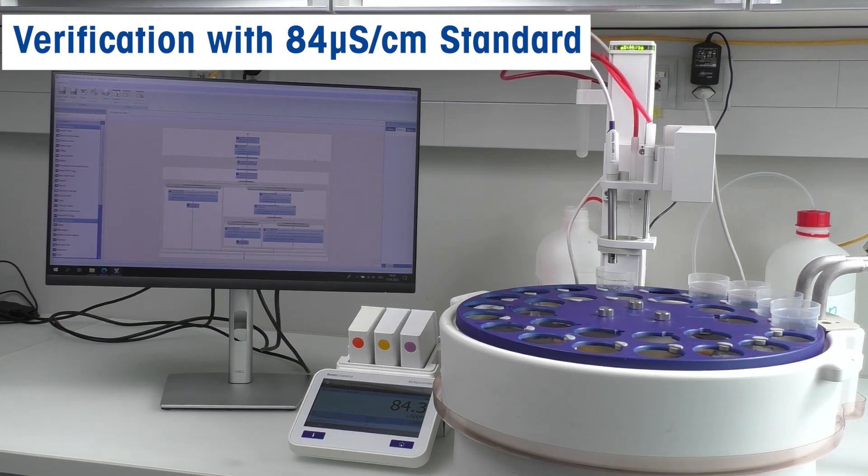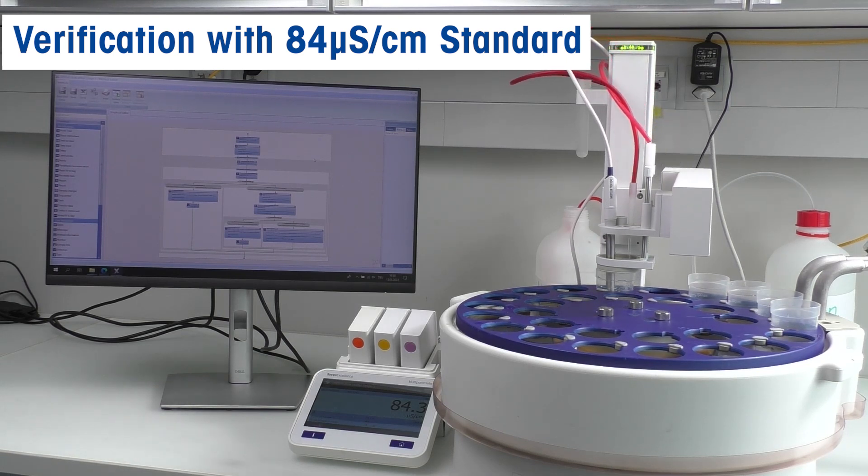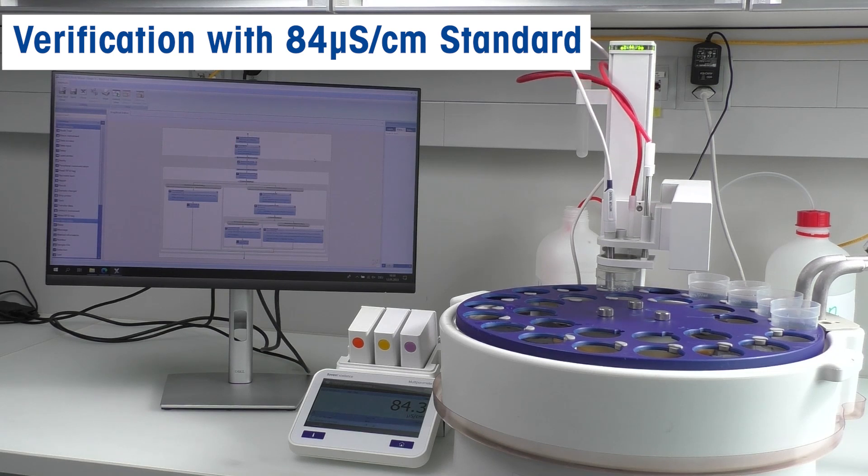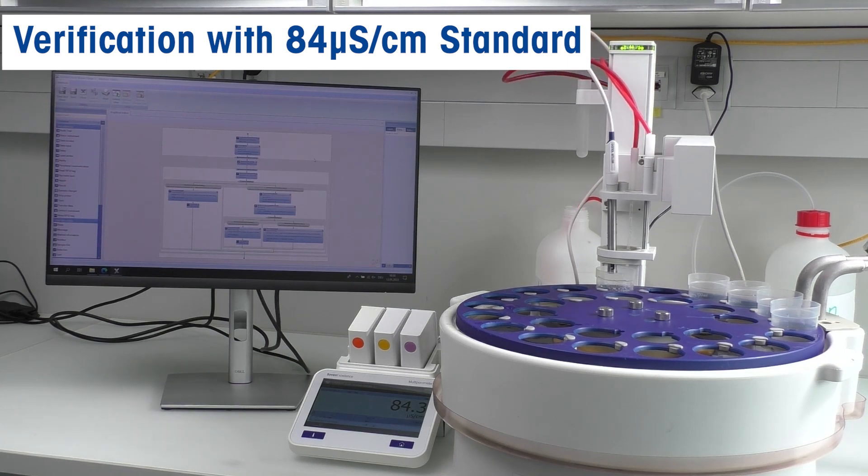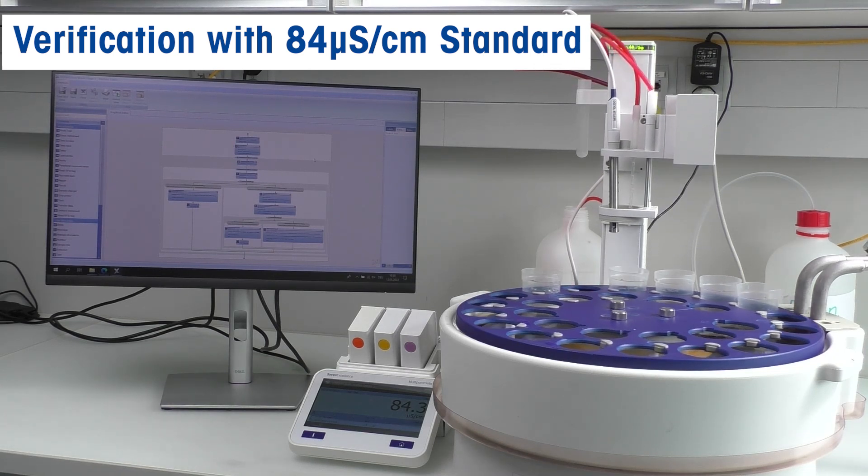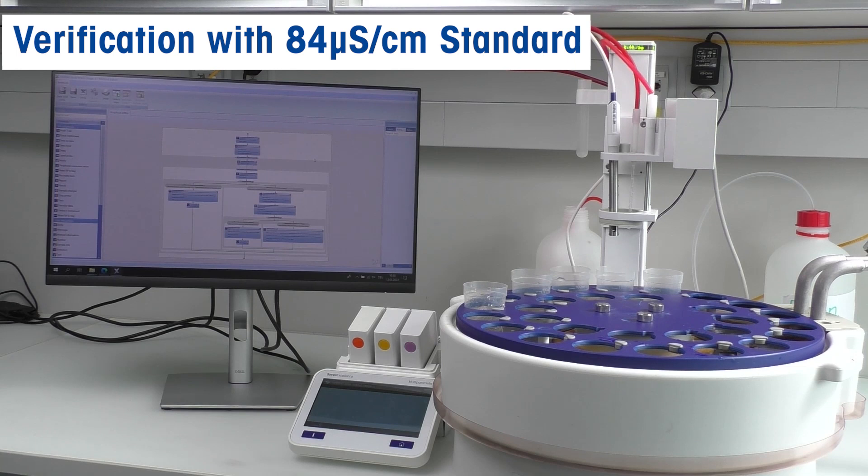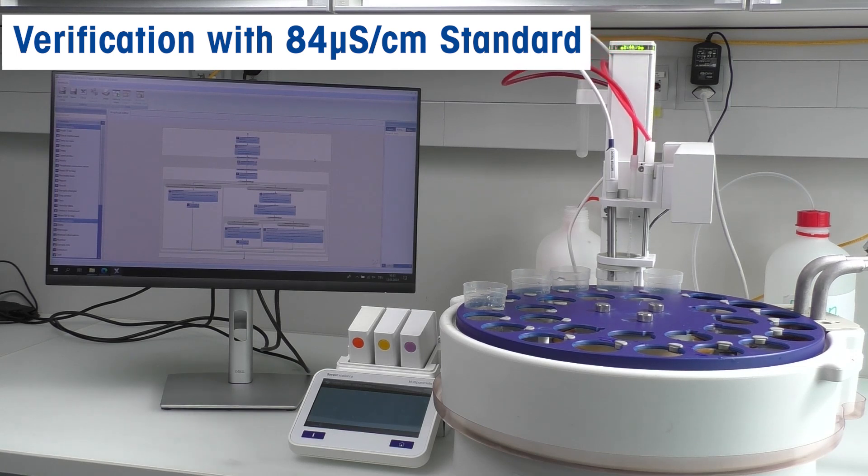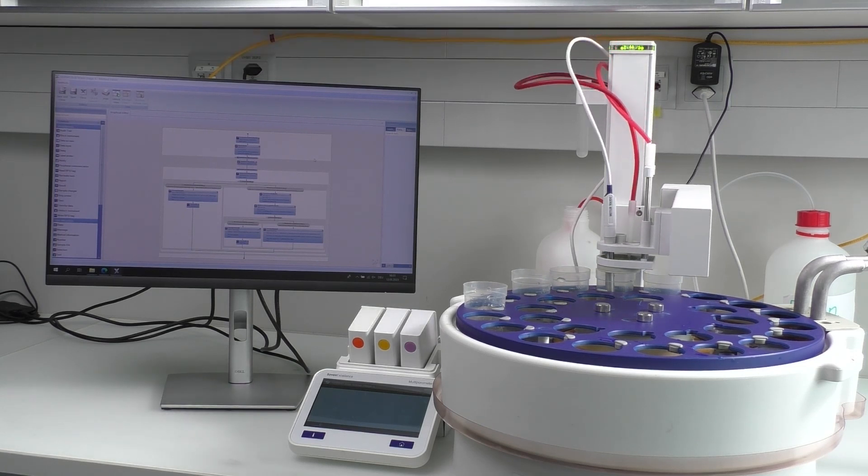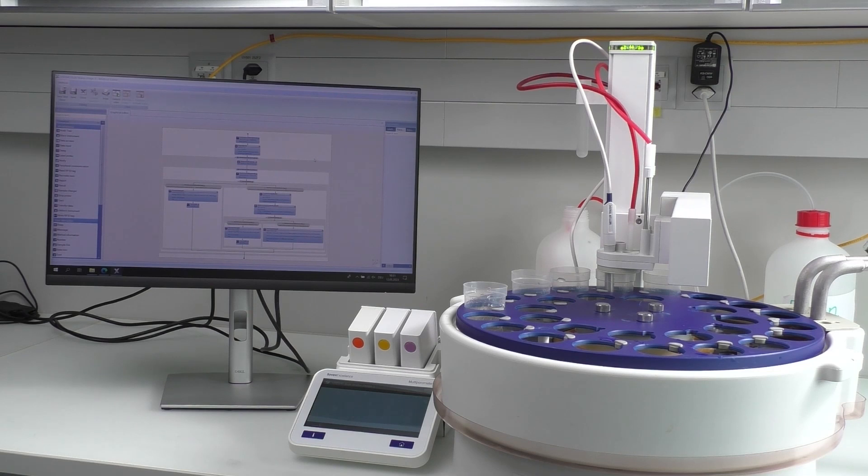The reading must be within plus or minus two percent of the real conductivity value stated in the solution certificate of the specific lot. As we are using the automated workflow, the comparison with the buffer table is done automatically in the system. After passing the verification, we can start measuring samples.